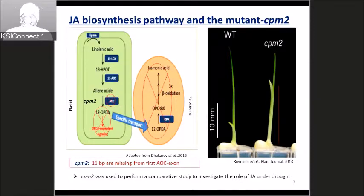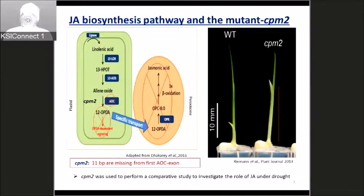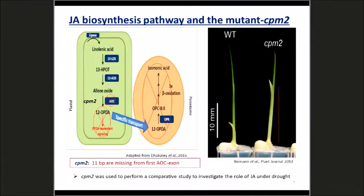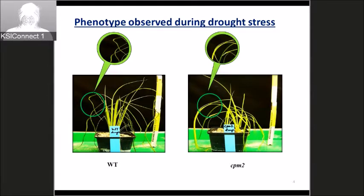We used this mutant to perform a comparative study to investigate the role of jasmonic acid under drought. When we subjected the mutant and the wild type to drought stress by withholding water, we found that CPM2 was less sensitive as compared to the wild type — the wild type leaves were completely shriveled and the plant was totally wilted.